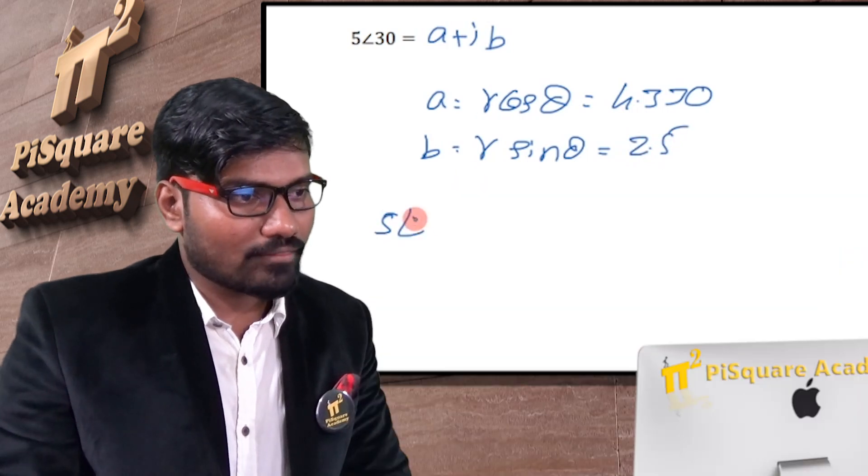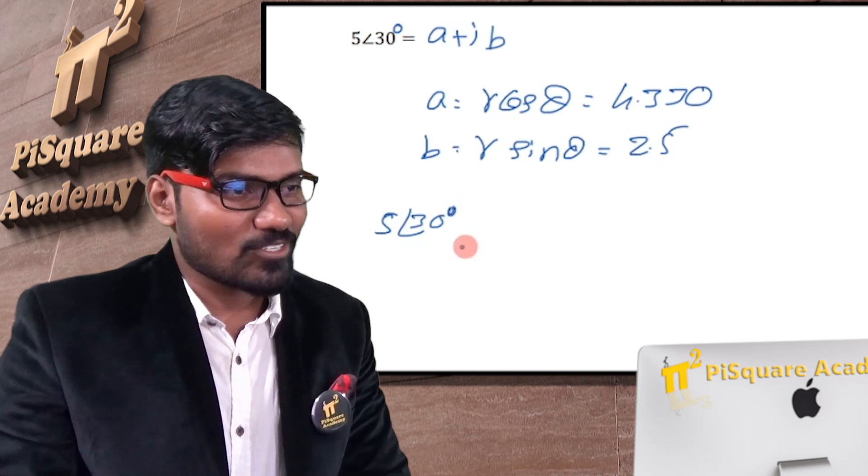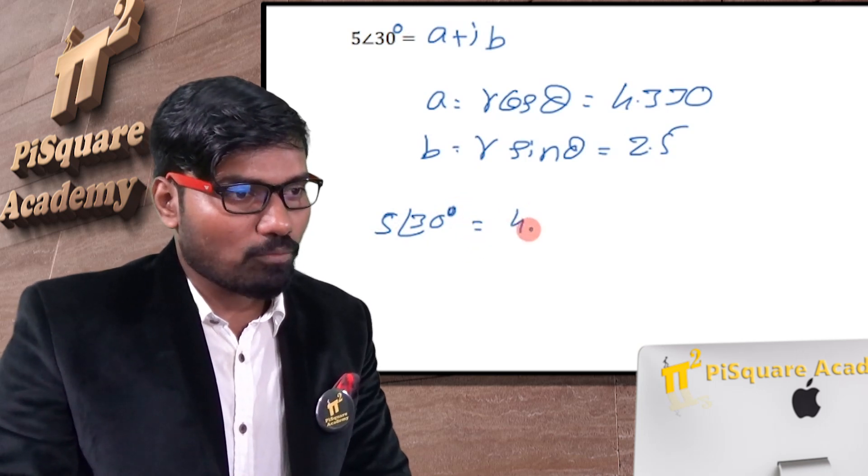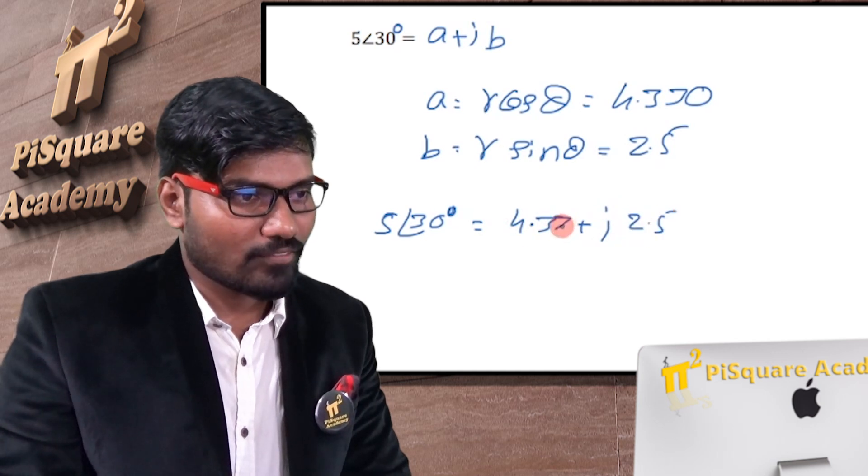So 5 at an angle 30 degrees, nothing is given here means 30 degrees, it's in degrees, not in radians. Is equal to 4.33 plus j 2.5.